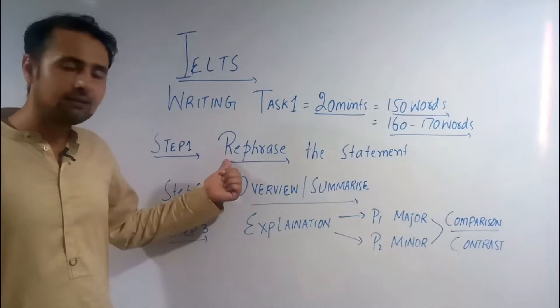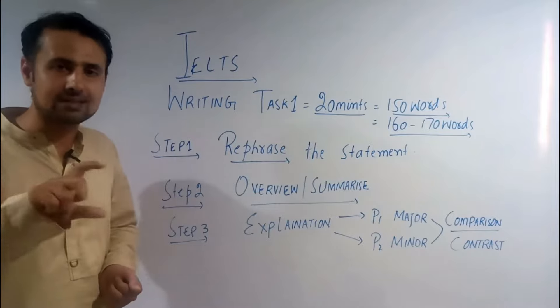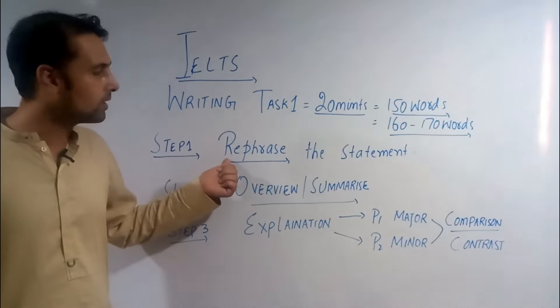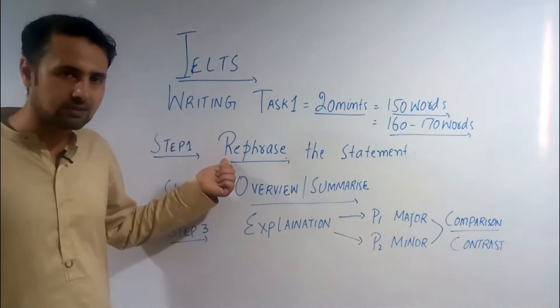Instead write: 'The given graph, table, or bar chart conveys or depicts information about...' whatever the statement is about. So you need to avoid using the word 'below.'